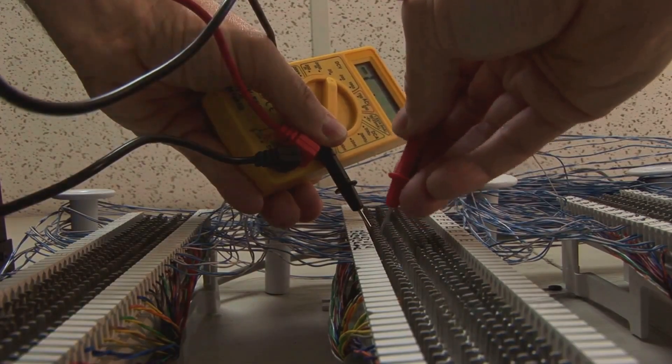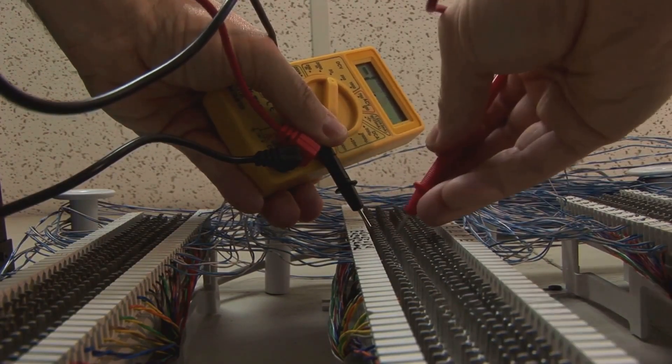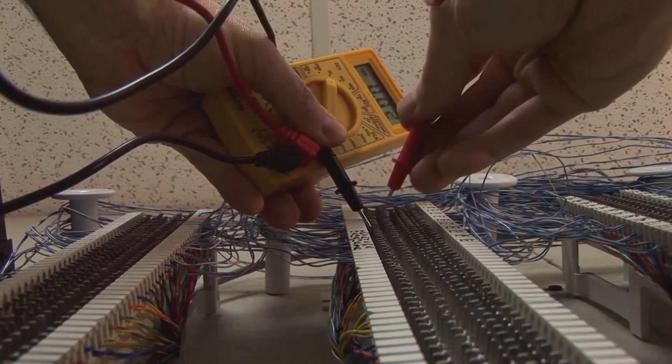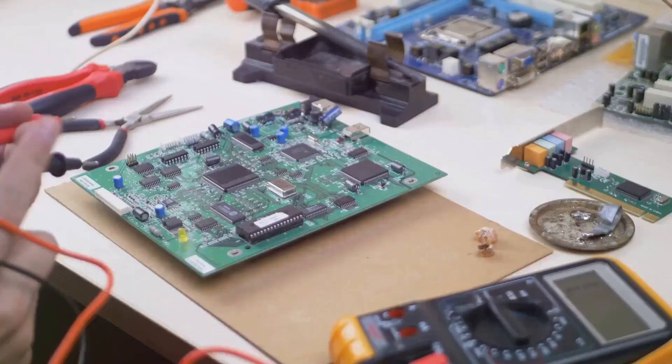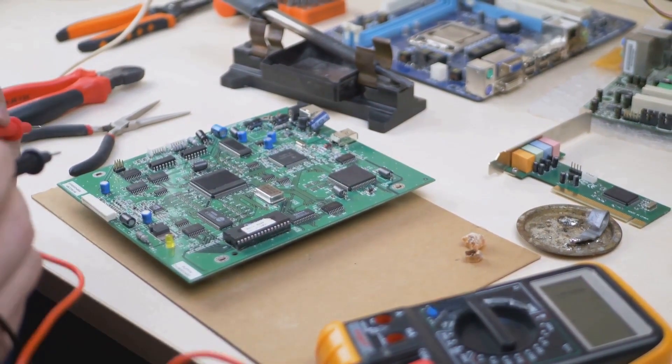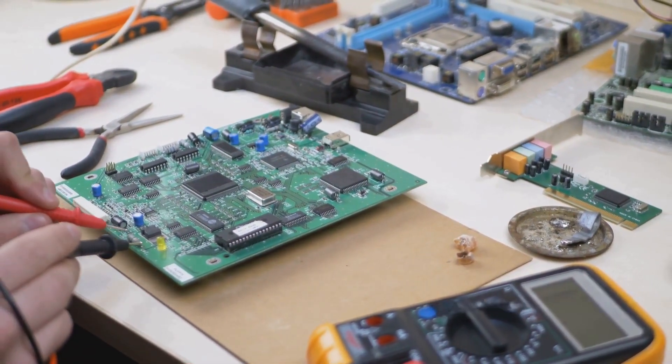Now if you've tried all of these steps and your multimeter still won't read voltage, it's time for step 4: the internal components. This step requires a bit more technical know-how. This step is a bit more advanced. You'll need to be comfortable working with small electronic components.